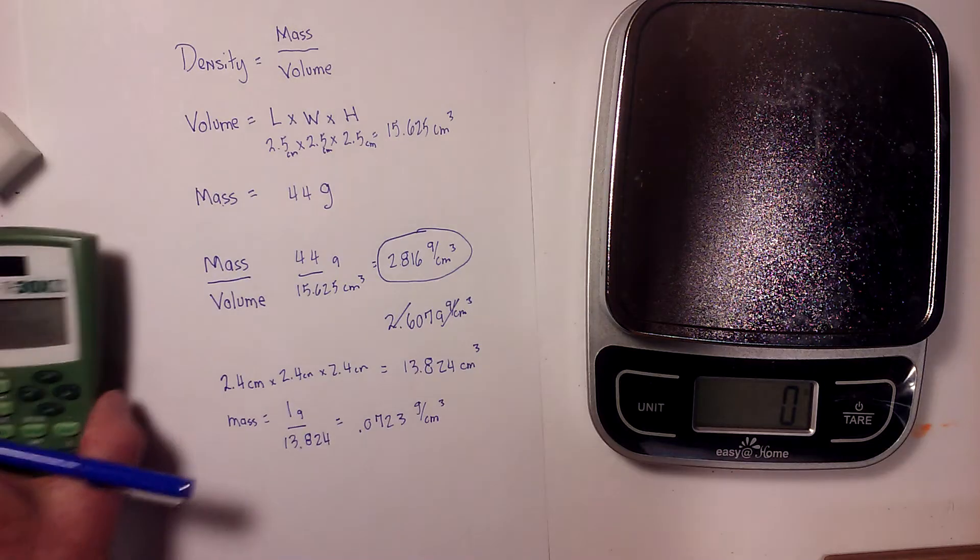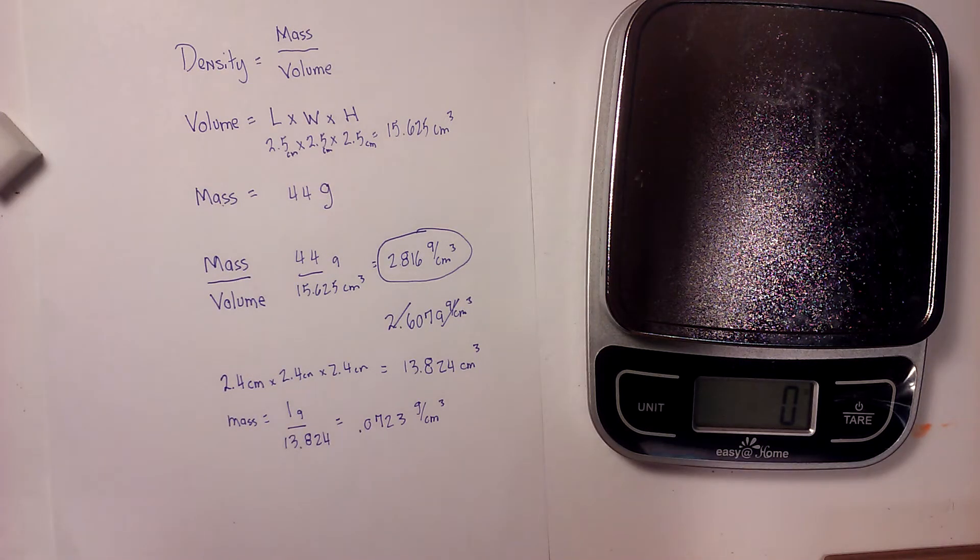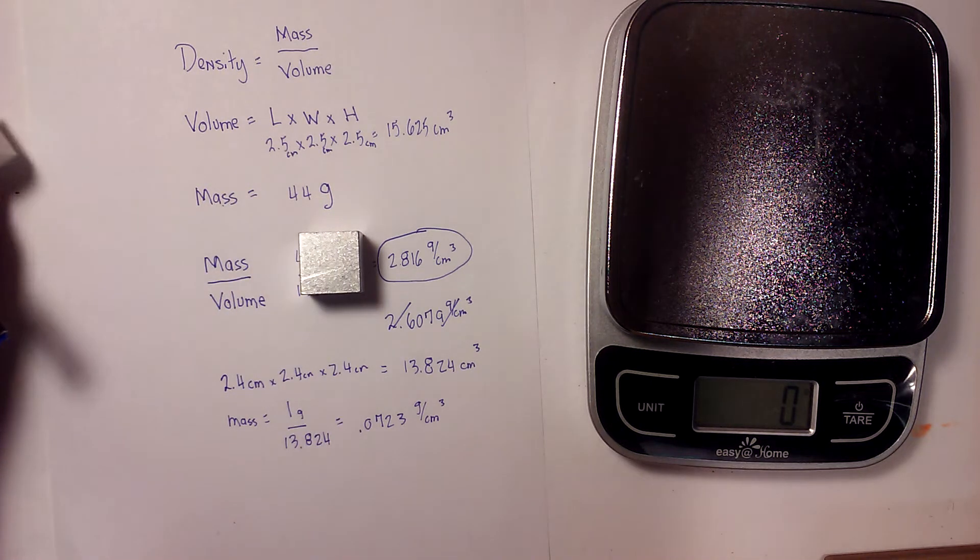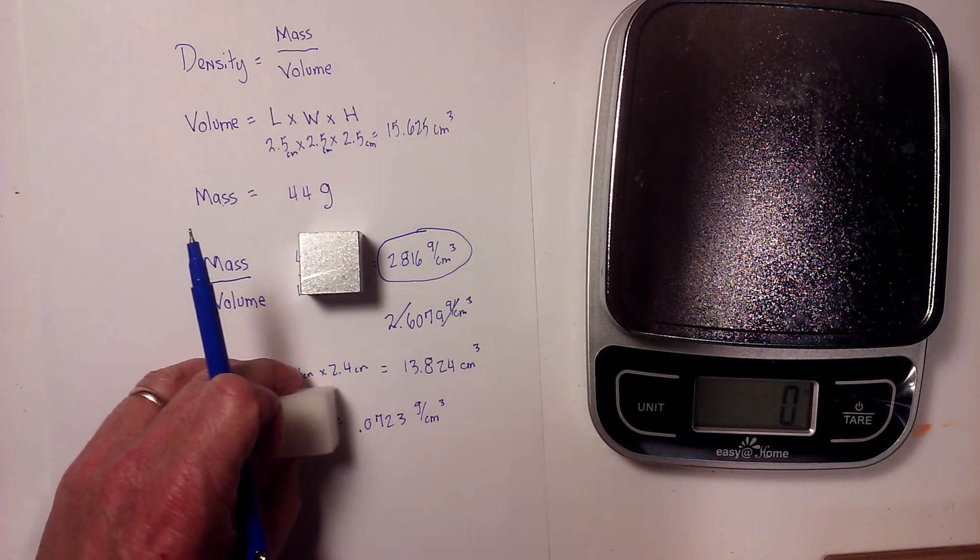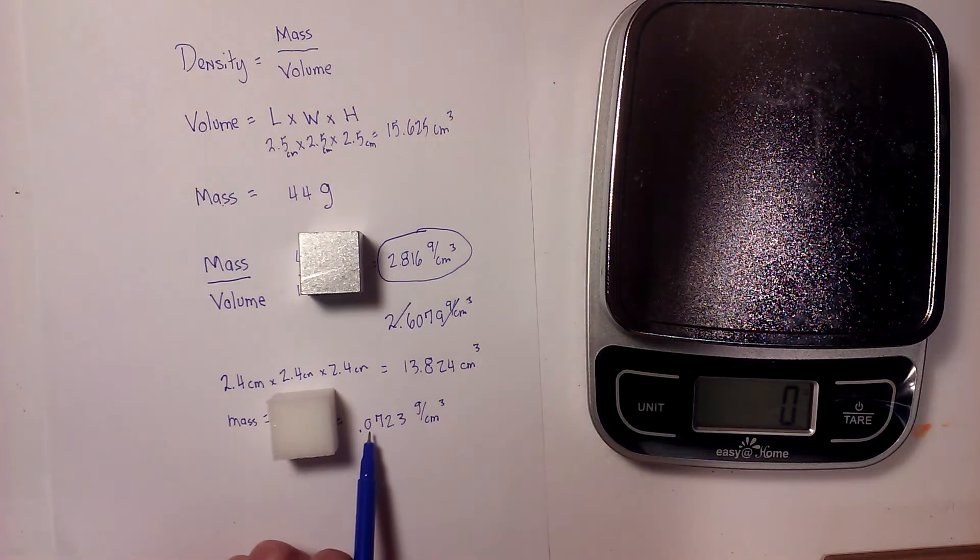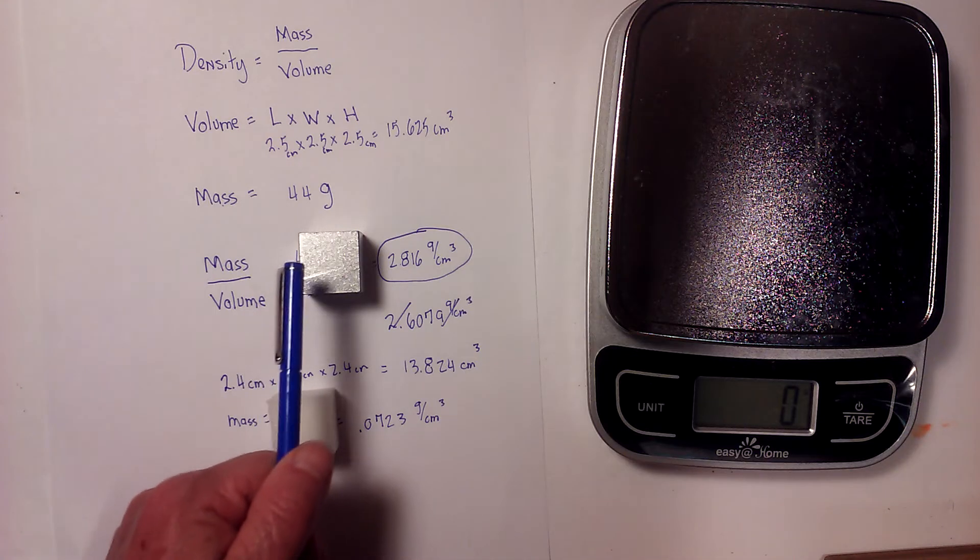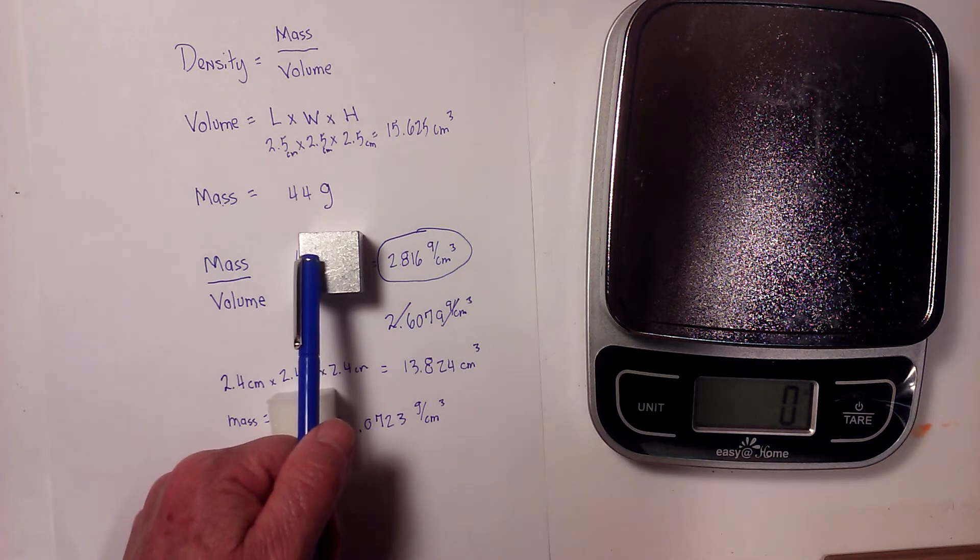As you can tell, the aluminum is a little bit heavier with a density of 2.816, and the foam only has a density of 0.0723. We know that since this density is less than 1 it's going to float, and the aluminum will sink.